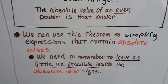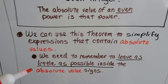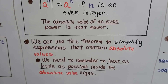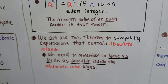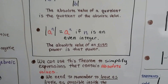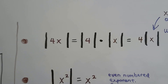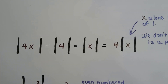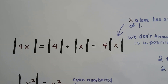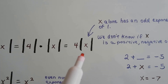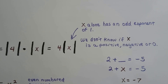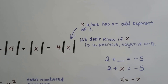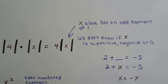We need to simplify absolute values, but we need to remember to leave as little as possible inside those absolute value signs. To simplify, we'll pull some values out, but some might have to stay in. For example, the absolute value of 4x equals the absolute value of 4 times the absolute value of x. That x is alone — we don't know if it's positive or negative — and it has an exponent of 1, which is odd, so it stays inside the absolute value bars.